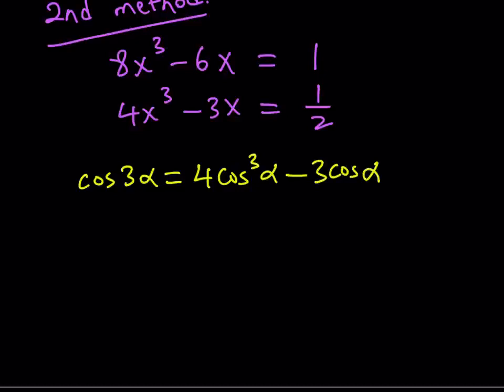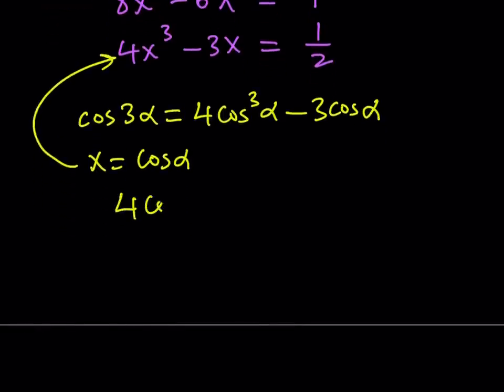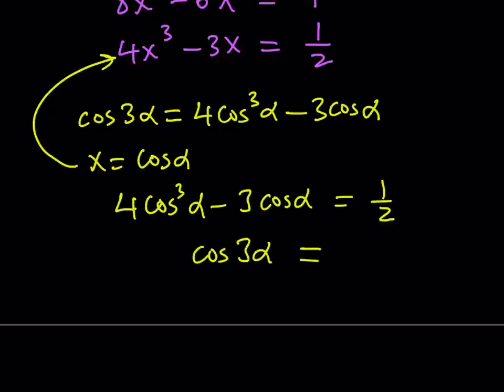There you go. You got it. So, if I replace x with cosine α in this equation right here, then I should be getting something like 4 cos³α minus 3 cosα is equal to 1/2. And 1/2 is not a coincidence. Of course, it's the cosine of something. And now the left-hand side becomes cosine of 3α. And the right-hand side becomes the cosine of π/3.